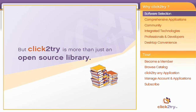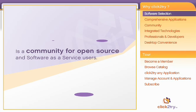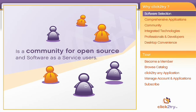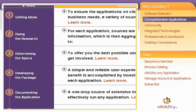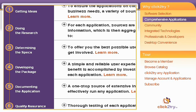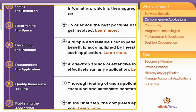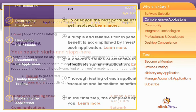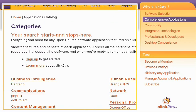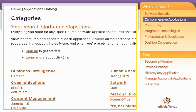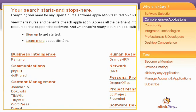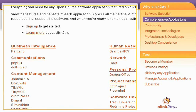But Click2Try is more than just an open source library. It's a community for open source and software as a service users. To make it into the catalog, each carefully selected application must pass a rigorous evaluation. Each category contains one or more powerful applications from the Click2Try open source software list.